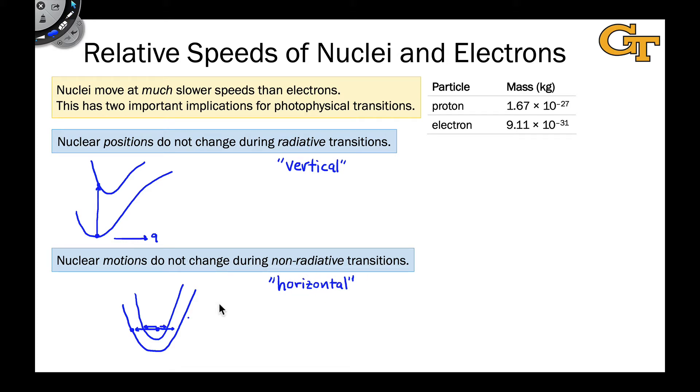Now that we've laid down this groundwork, we can ask about the relative rates or relative likelihood of a transition given, for example, the energy gap between the initial and final states, or given the differences in equilibrium positions of the initial and final states. And this is where the Franck-Condon Principle and Fermi's Golden Rule come into play.